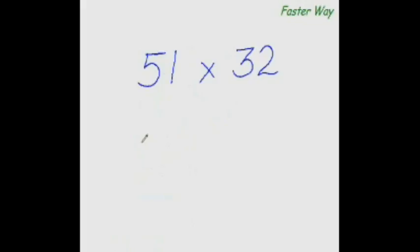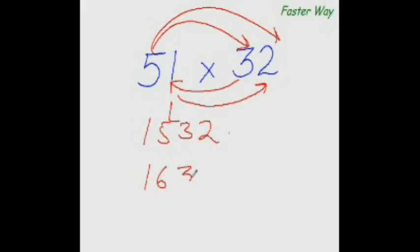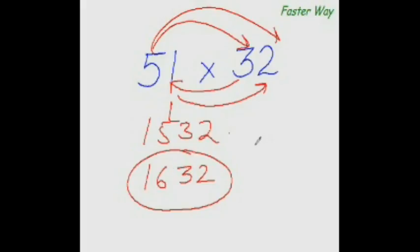Now let me show you the faster way of multiplying any 2-digit number with any other 2-digit number. Watch me. This is what my answer is — 1632. Have you understood how I have done this?